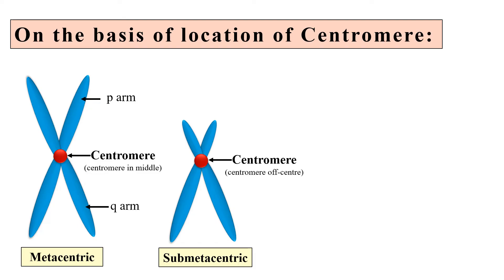The second type on the basis of centromere location is submetacentric. Here the centromere is shifted away from the center — it is off-center, as you can clearly see in the diagram. In humans, chromosomes number 2, 4 to 12, 17, 18, and chromosome X are the submetacentric chromosomes.